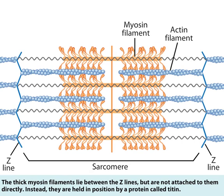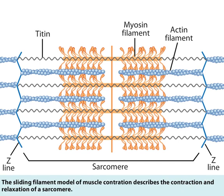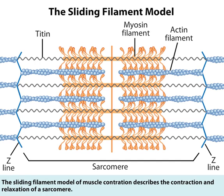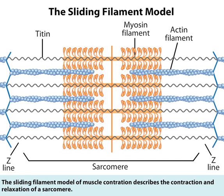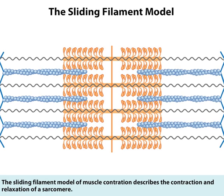Instead, they're held in position by a protein called titin. The sliding filament model of muscle contraction describes the contraction and relaxation of a sarcomere.